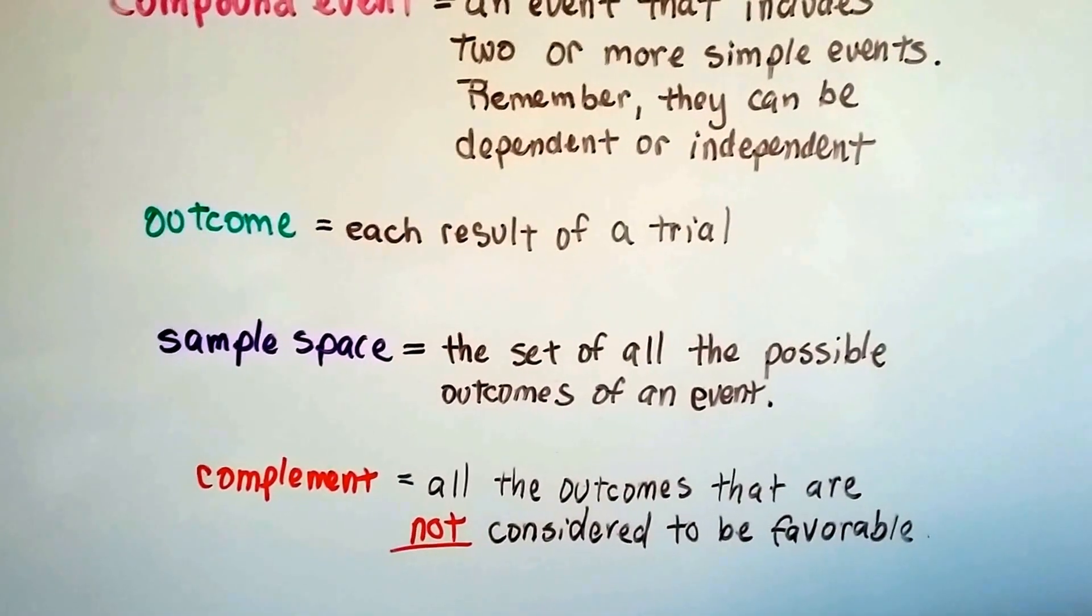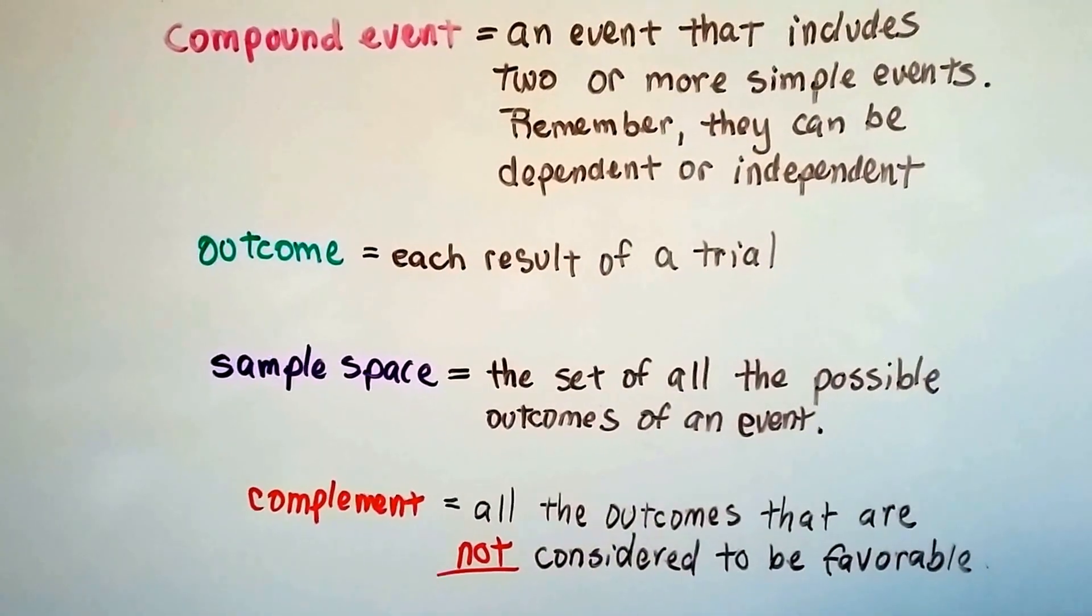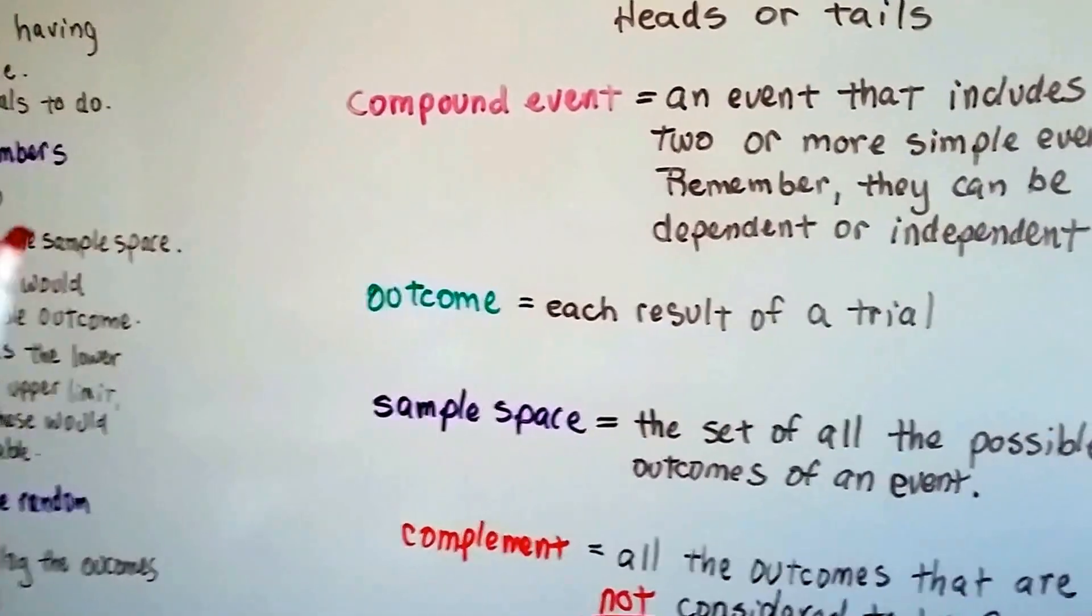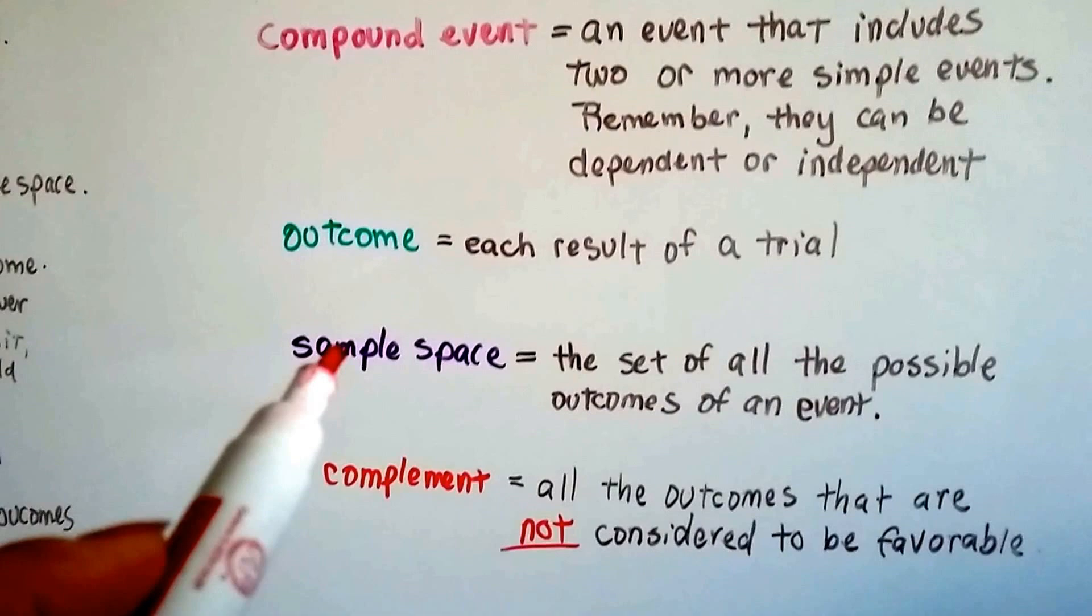The sample space is the set of all the possible outcomes of an event. So if you did do 1 through 10 as numbers, all those numbers, 1, 2, 3, 4, 5, 6, 7, 8, 9, 10, would be the sample space.